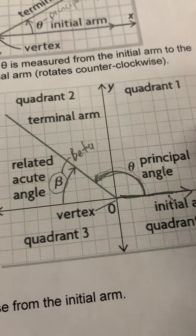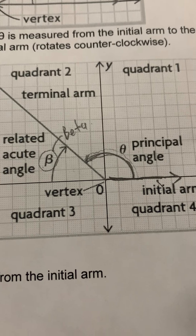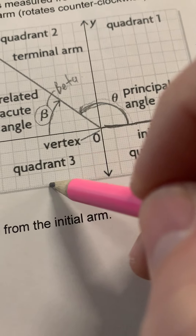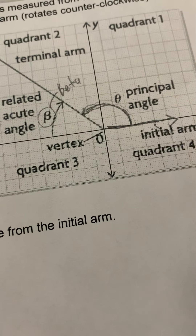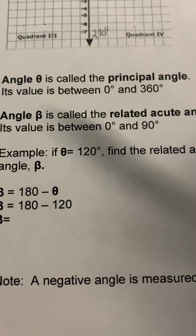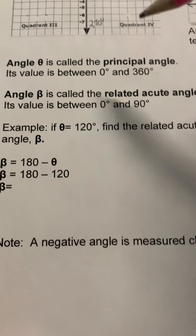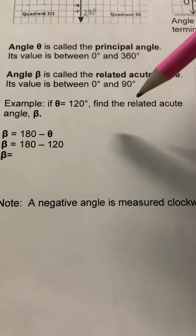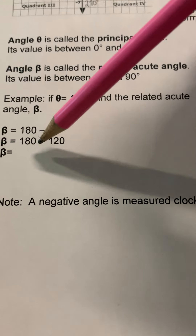A couple of terms we need to know. When we're drawing the angle, depending on whatever quadrant we're in, the angle between the x-axis and the next arm — which is called the terminal arm — is theta. So this is called our principal angle. We count the angle from the initial arm, which is the x-axis, counterclockwise until we hit the terminal arm. The angle in between is called our principal angle.